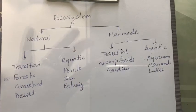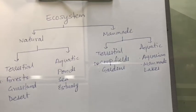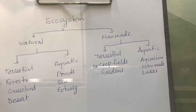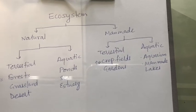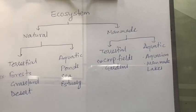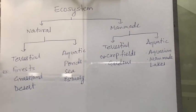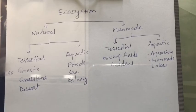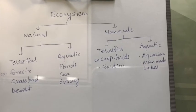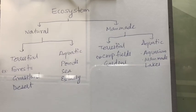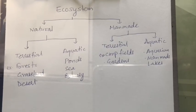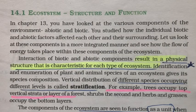Ecosystems can be natural or man-made. Natural ecosystems can be further terrestrial or aquatic. Natural terrestrial ecosystems include forests, grasslands, or deserts. Natural aquatic ecosystems include ponds, natural lakes, sea, and estuaries — estuaries are areas where the river meets the sea. Man-made terrestrial ecosystems include crop fields and gardens, while man-made aquatic ones include aquariums or man-made lakes.